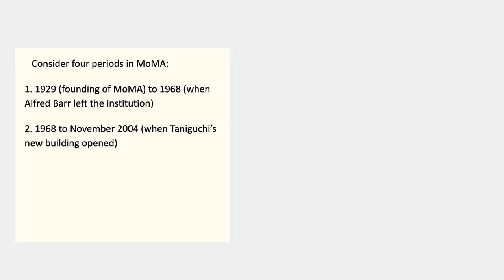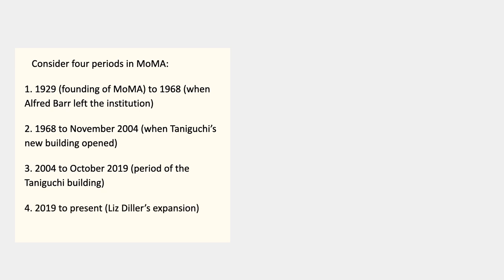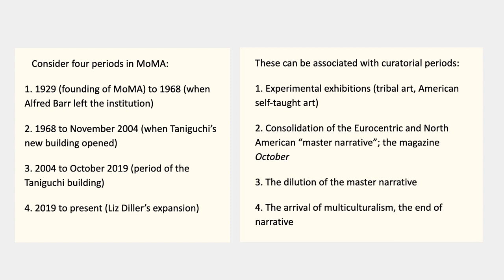A second period would be from 1968 to November 2004, when the architect Taniguchi's new building, the new extension to MoMA, opened. The third period would be the period of the Taniguchi building, 2004 to 2019. A fourth period began in 2019 with a renovation overseen by the architect Liz Diller. When you study large museums, it's always a good idea to have a sense of the history of their curations and their departments and curators.